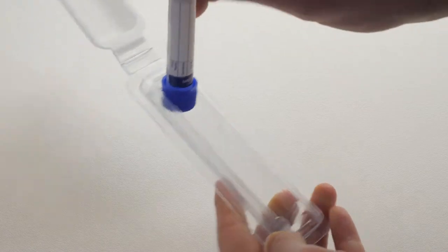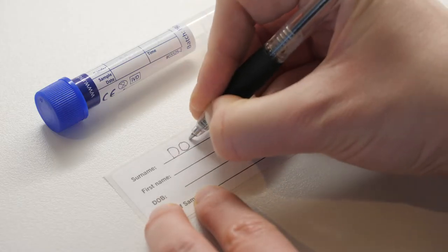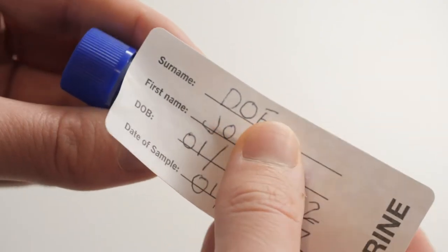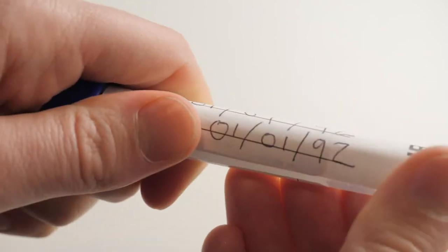Unpack the testing kit. Write your full name and date of birth on the label named urine supplied in your pack. Affix the label by placing the tube in the middle of the label and wrapping the label around the tube.